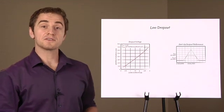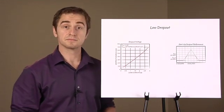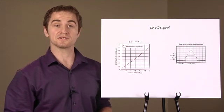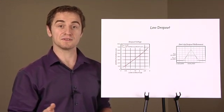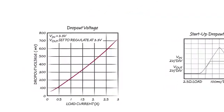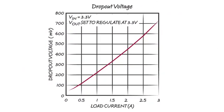The next chart shows dropout performance. In many circuits, it's important for the step-down regulator to operate with a small voltage between VIN and VOUT under conditions such as depleted battery.